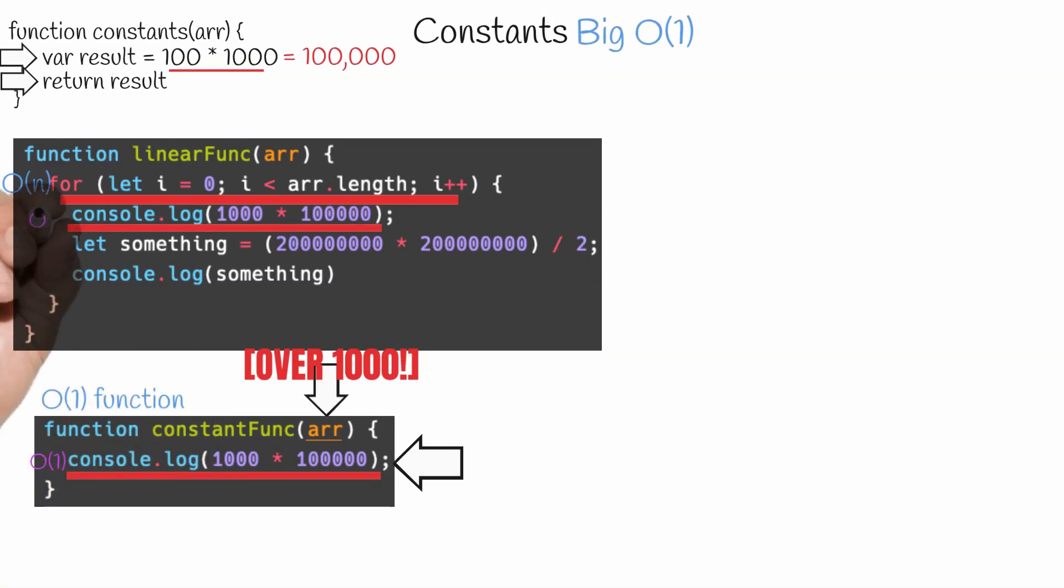But wait, in this function, we have multiple lines that are O of one, yet we still prioritize the line that is O of n and ignore the O of one operations. Why is this?